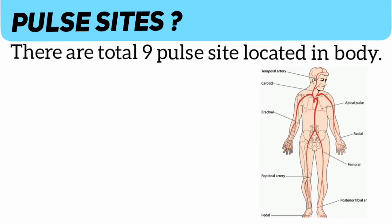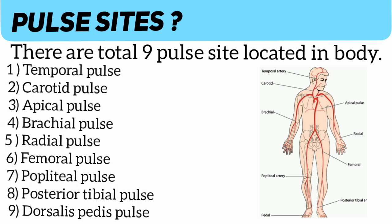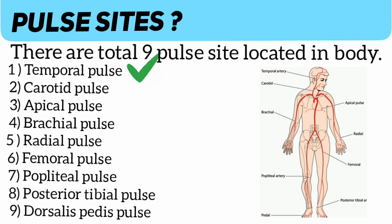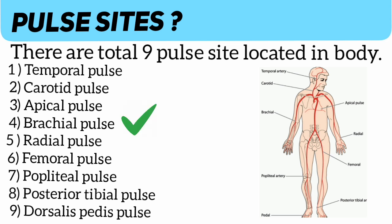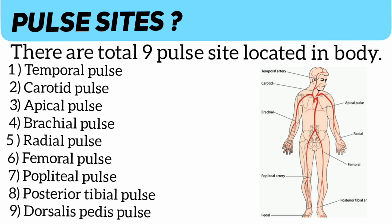There are a total of nine pulse sites located in the body: temporal pulse, carotid pulse, apical pulse, brachial pulse, radial pulse, femoral pulse, popliteal pulse, posterior tibial pulse, and dorsal pedis pulse.